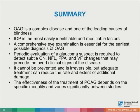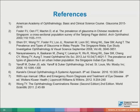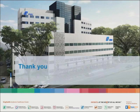In summary, open angle glaucoma is a complex disease and one of the leading causes of blindness. Intraocular pressure is the most easily identifiable and modifiable of risk factors, and a comprehensive eye examination is essential for the earliest possible diagnosis. Periodic evaluation of the glaucoma suspect is required to detect subtle structural and functional changes that may precede overt clinical signs. It cannot be prevented and is irreversible, but adequate treatment can reduce the rate and extent of additional damage. The effectiveness of treatment varies significantly between studies. Thank you for your attention.